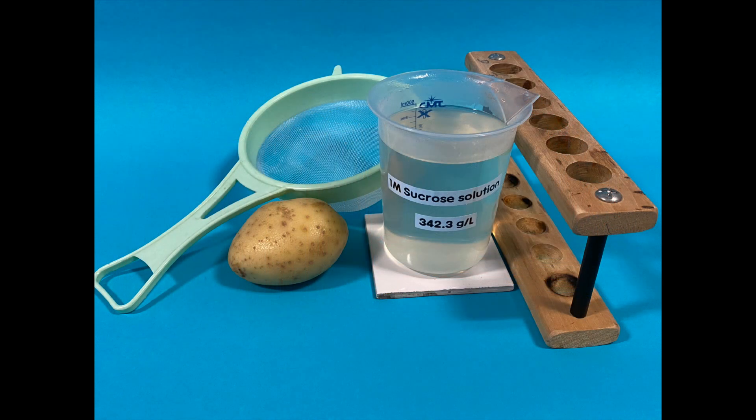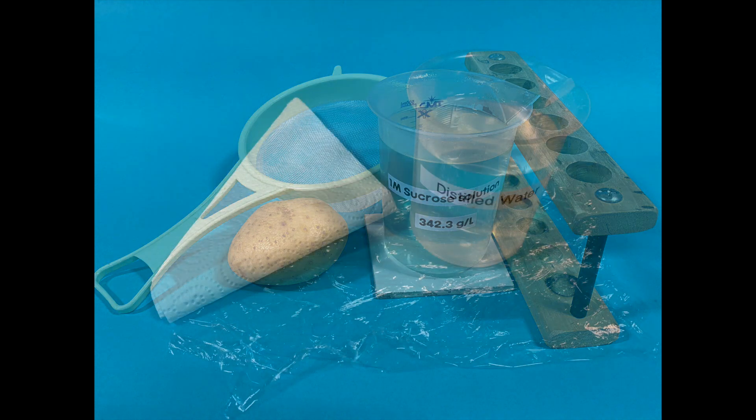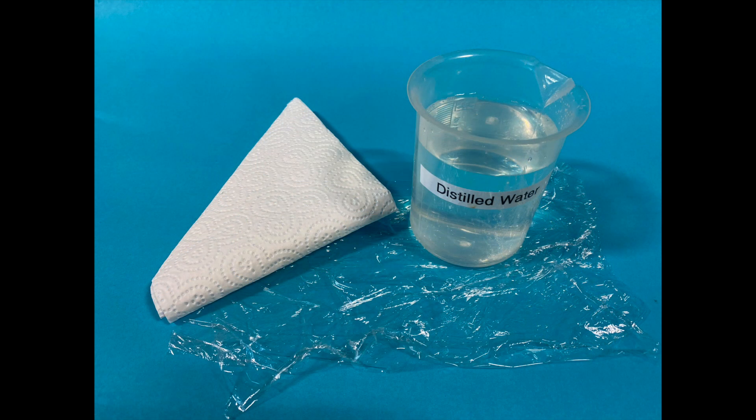Other items will be a potato or potato chips, one molar sucrose solution, a sieve, some blotting paper, some cling film, and a test tube rack.